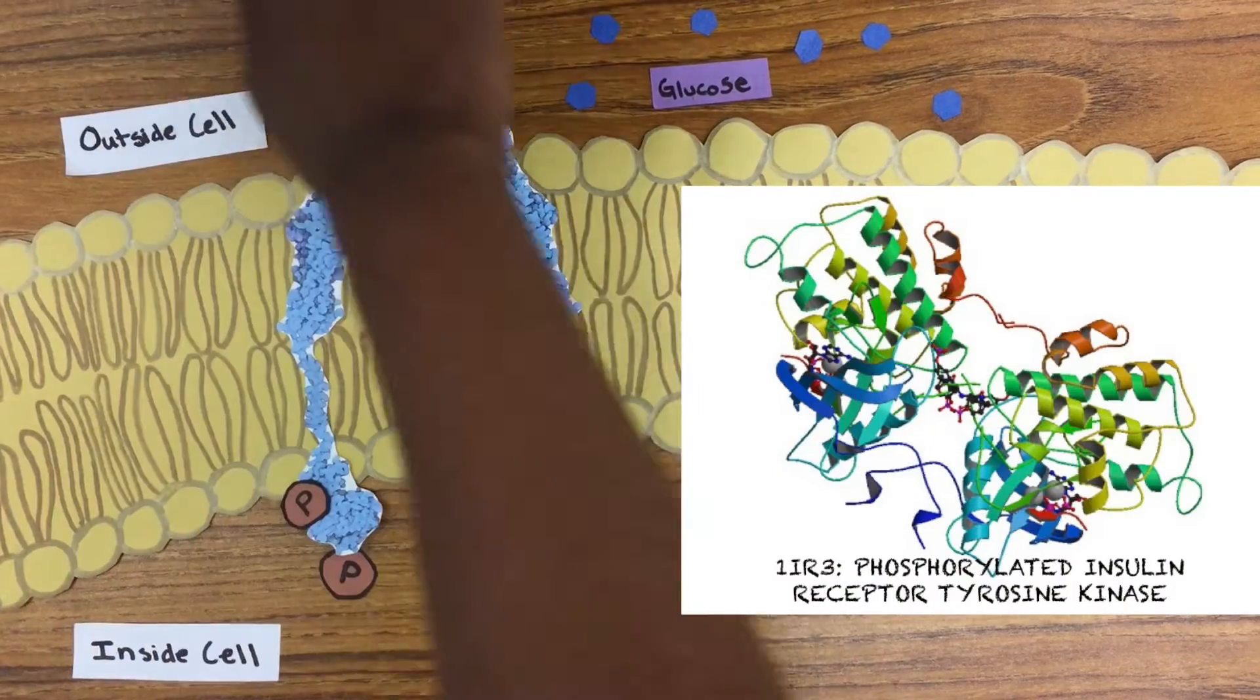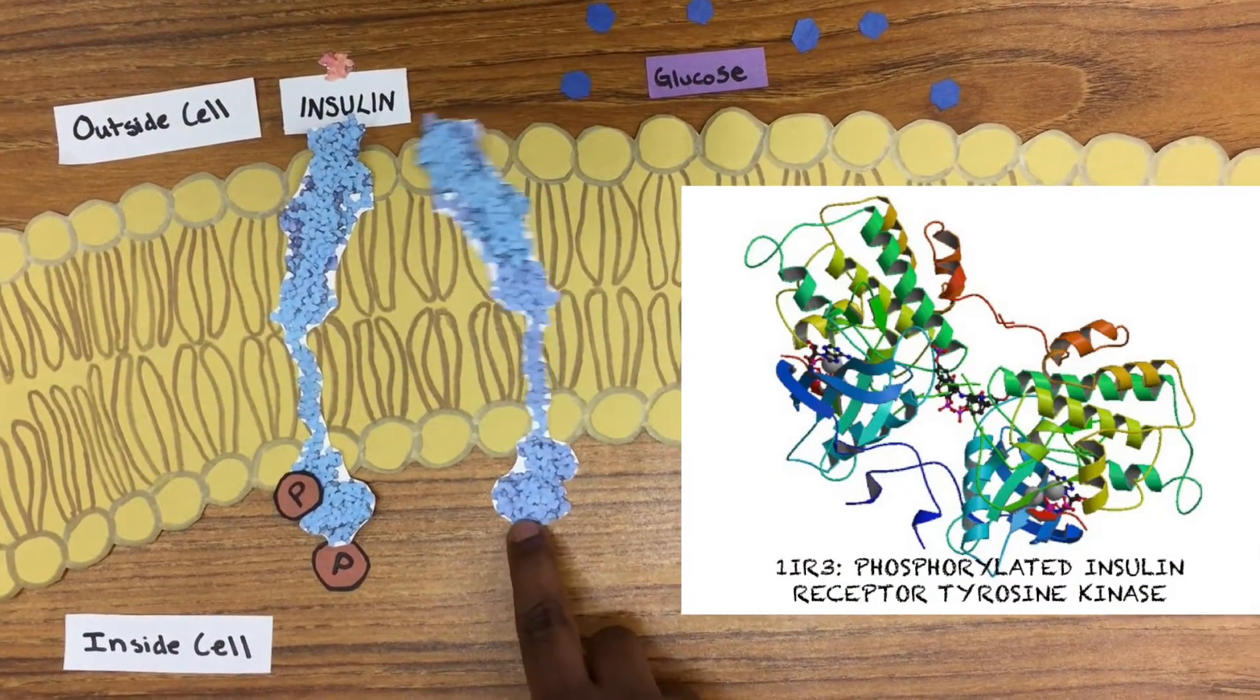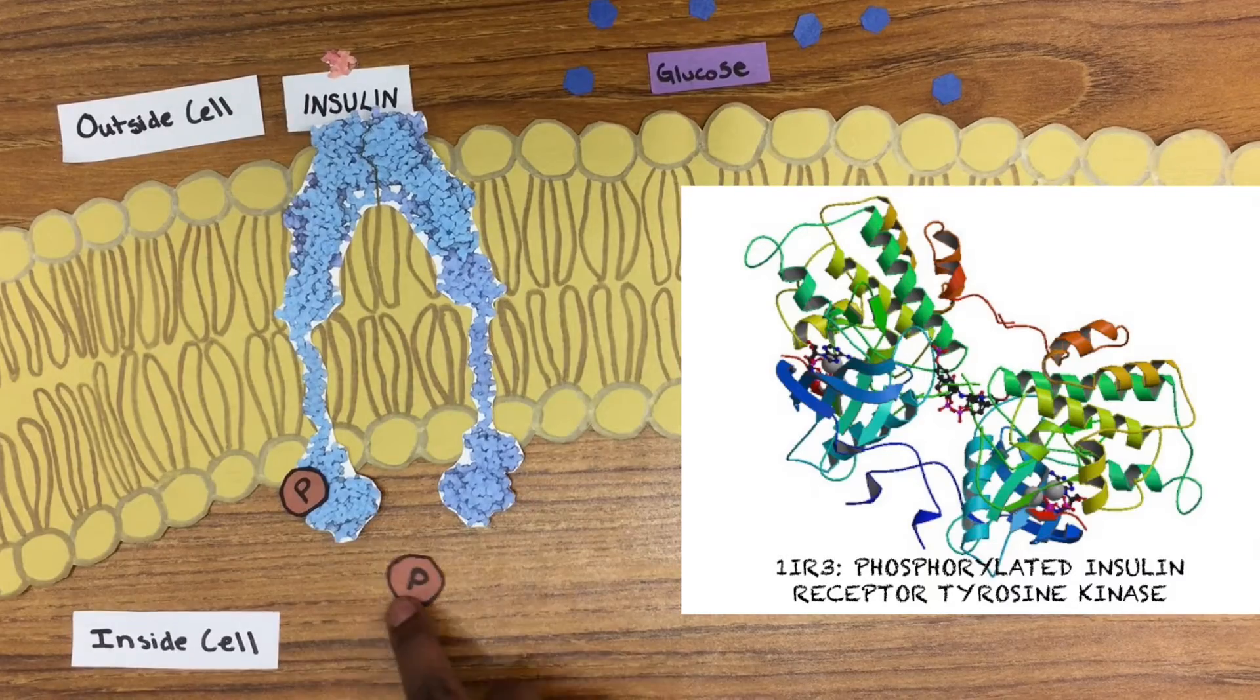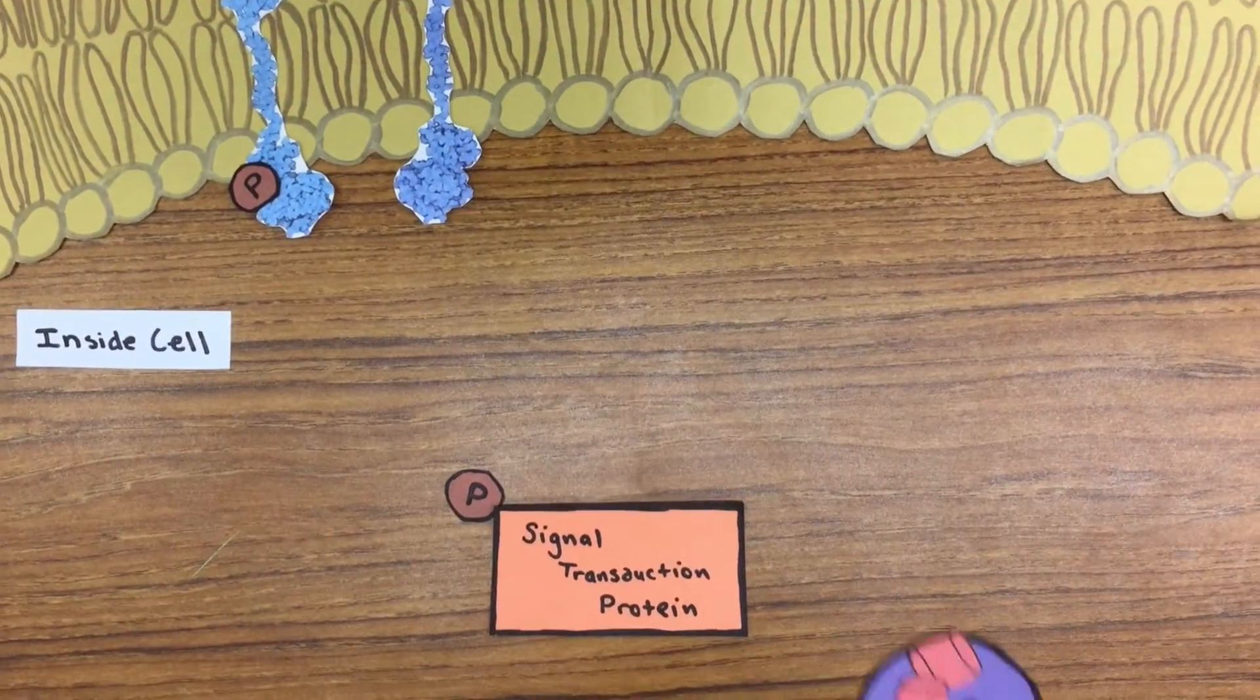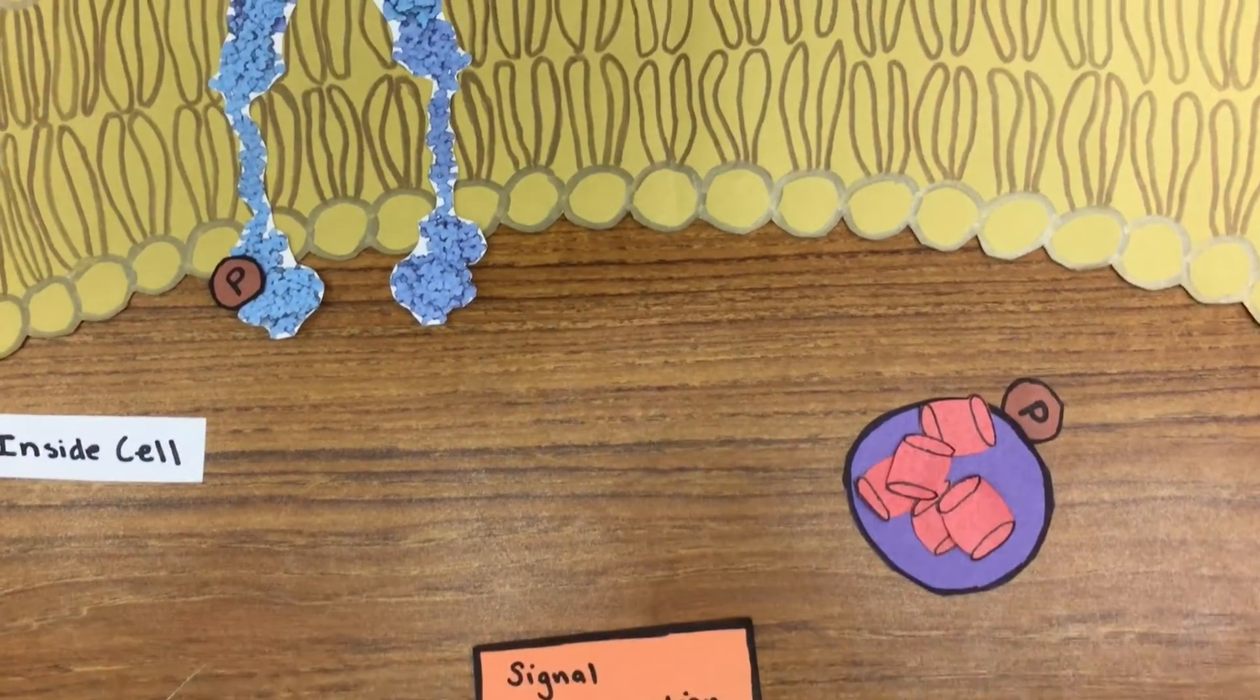The insulin signaling pathway begins when an insulin molecule binds to a tyrosine kinase insulin receptor. This activates it and causes dimerization. Then, one of the many signal transduction proteins causes a vesicle of glucose transporters to bind to the cell membrane, thus allowing glucose to move out of the bloodstream into the cell.